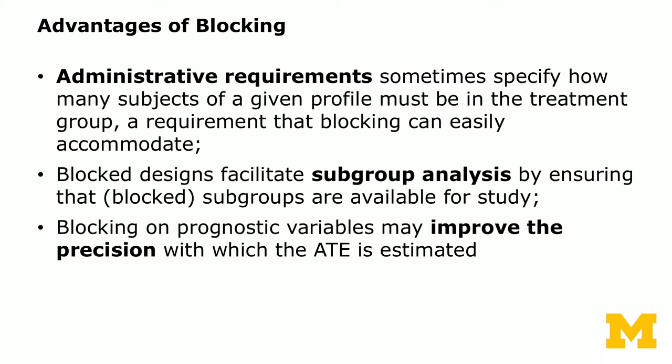Blocking also helps with subgroup analysis, sometimes called heterogeneous treatment effects. You can block on demographic subgroups such as race or gender to ensure the desired subgroups appear in your study. Less obviously, if you block on prognostic variables, it can improve the precision with which the average treatment effect is estimated — statistically reducing the standard error of the estimate.